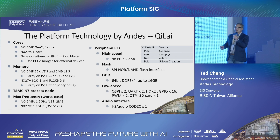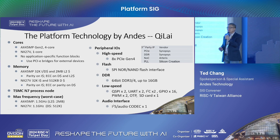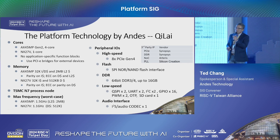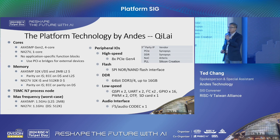This design is quite simple and will be more convenient for software porting. It is equipped with a PCIe peripheral, and you can leverage the PCIe interface to extend your peripheral interface. We support SPI flash interface, and the DDR spec is 64-bit DDR3/4, up to 16 gigabytes. We also support some low-speed interfaces including QSPI, UART, I2C, and so on.